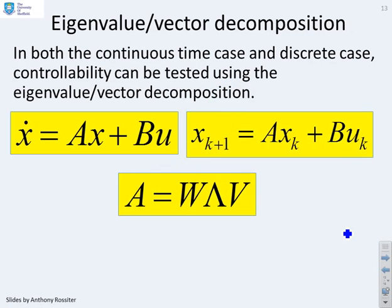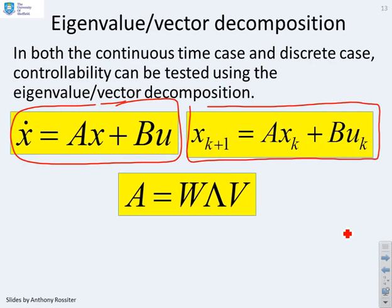In both the continuous time case and the discrete time case, we can test for controllability using an eigenvalue eigenvector decomposition. We've got continuous time here with the matrix A and B, or discrete time here with the matrix A and B. We do an eigenvalue eigenvector decomposition of the matrix A.